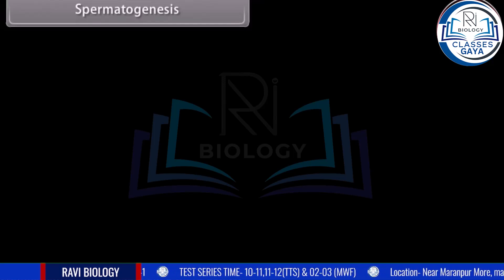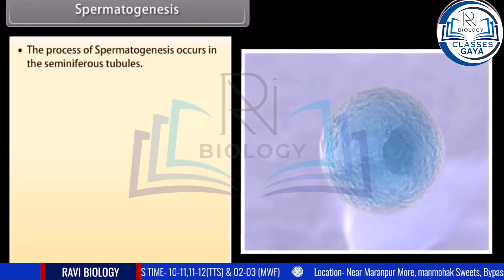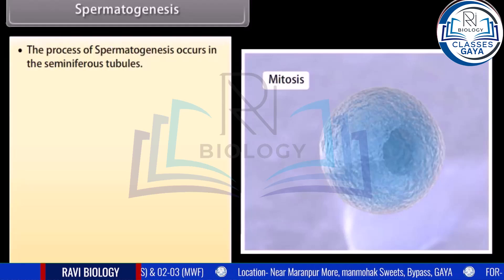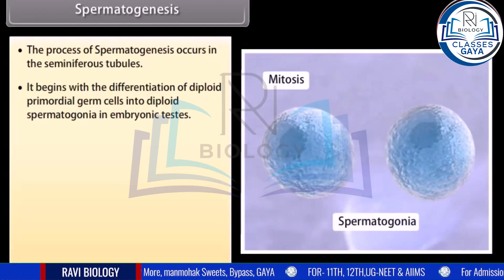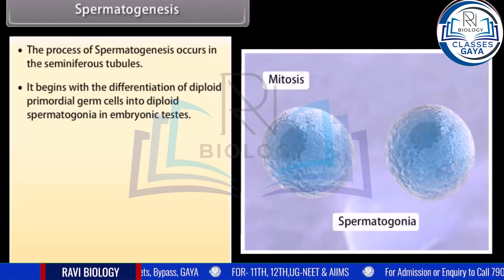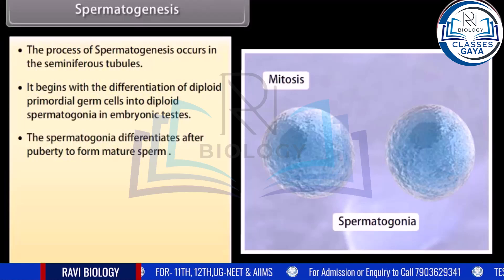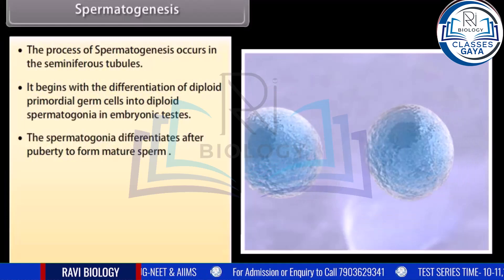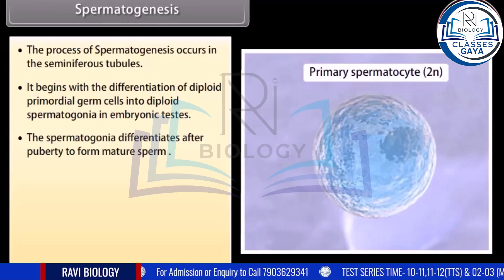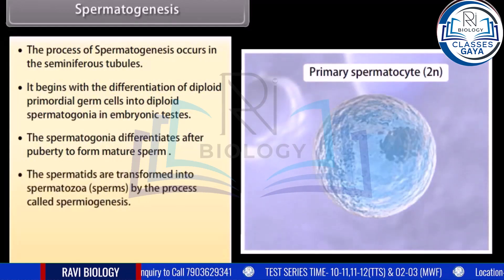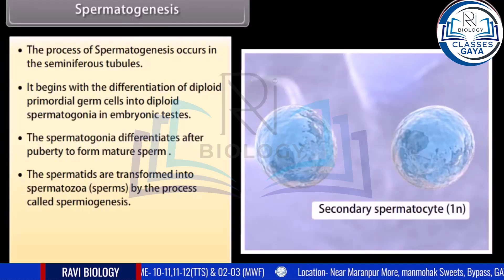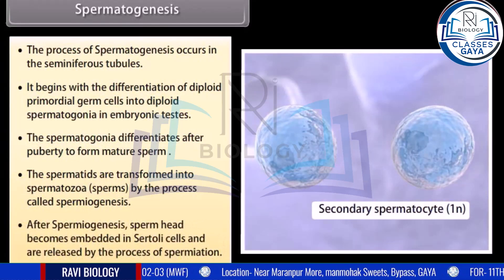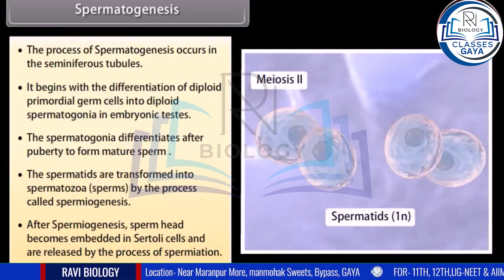Spermatogenesis occurs in the seminiferous tubules. It begins with the differentiation of diploid primordial germ cells into diploid spermatogonia in embryonic testes. The spermatogonia differentiates after puberty to form mature sperm. The spermatids are transformed into spermatozoa by spermiogenesis. After spermatogenesis, sperm heads become embedded in Sertoli cells and are released by the process of spermiation.